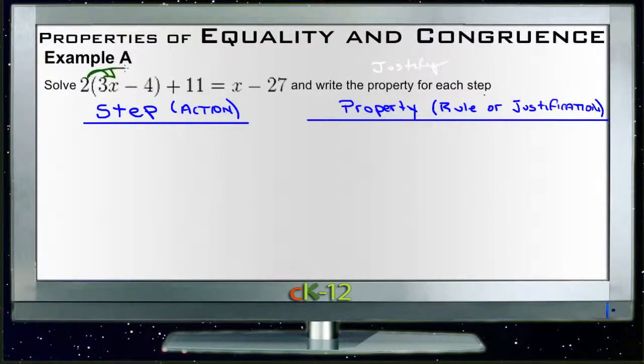Which is going to be the same as 2 times 3x minus 2 times 4, so this becomes 2 times 3x minus 2 times 4 plus 11 equals x minus 27, and that's the distributive property.